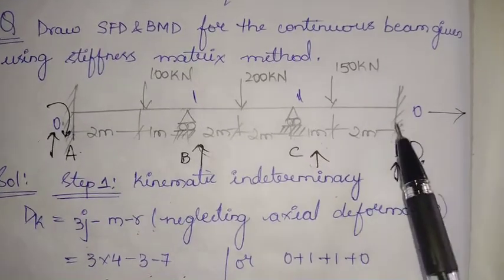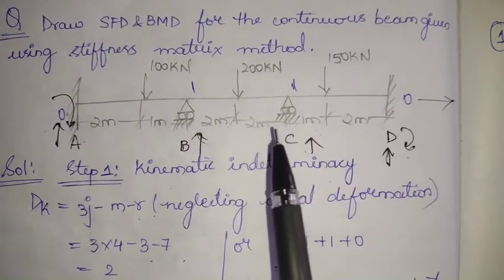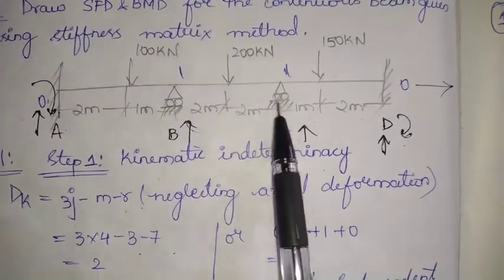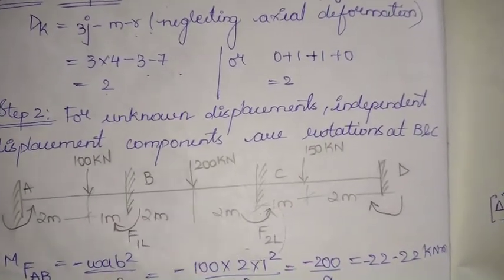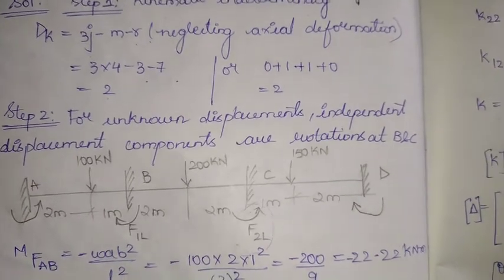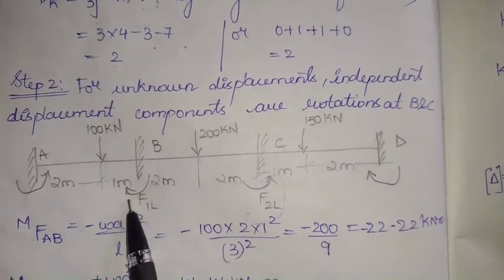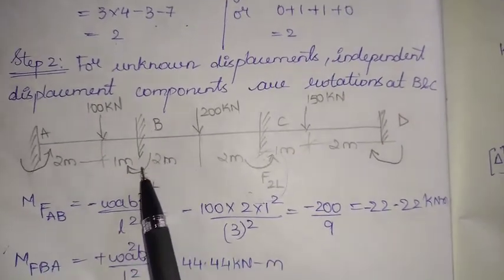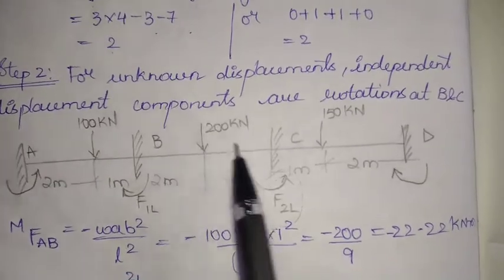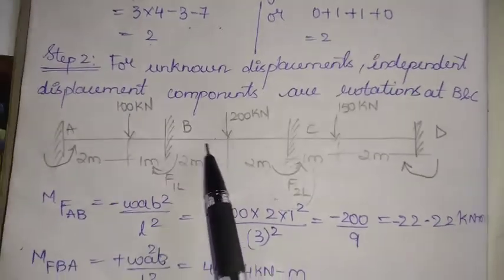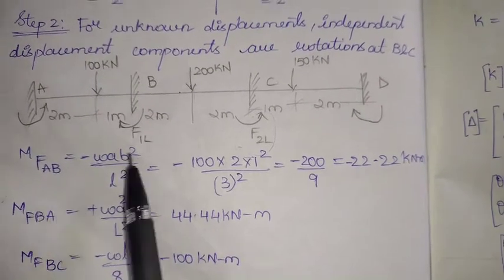At fixed ends there would be no rotation possible, and at roller supports when neglecting axial deformation, one degree of freedom is given at each roller support, giving two. The independent displacement components are rotations at B and C — theta B and theta C — both assumed clockwise, as the loading causes the BC span to sag.